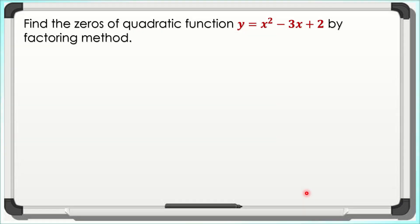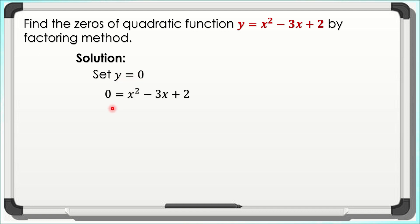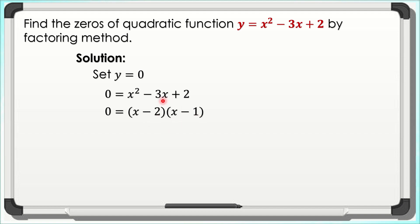Let us move on with our second method. We will find the zeros of y = x² − 3x + 2 by factoring. For the solution, we set y equal to 0. Therefore, our equation is 0 = x² − 3x + 2. Since our method is factoring, we factor the right side. The factors are (x − 2)(x − 1), since −2 + (−1) = −3 and (−2)(−1) = +2.